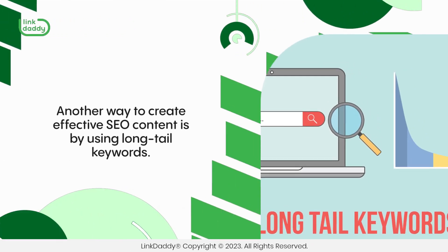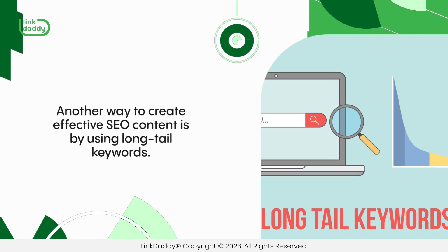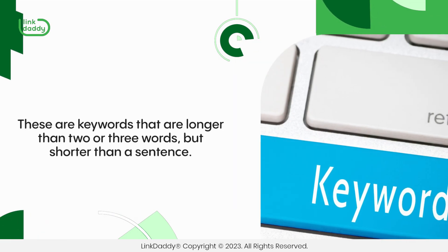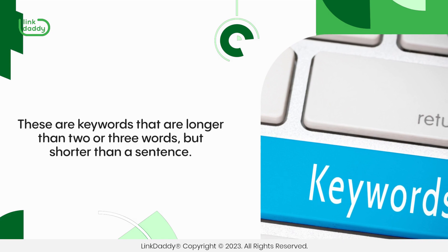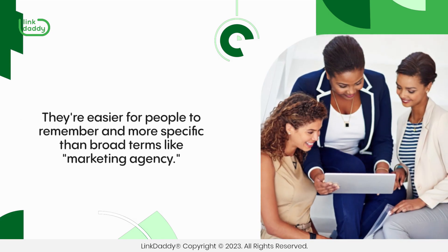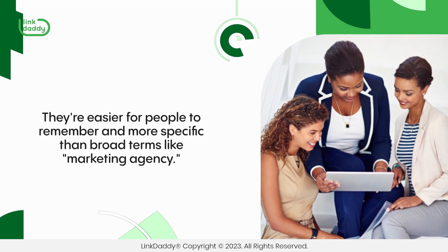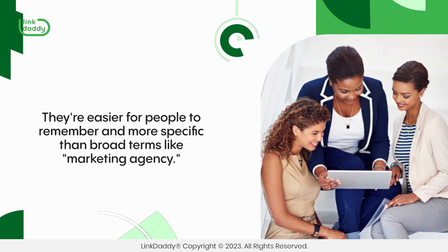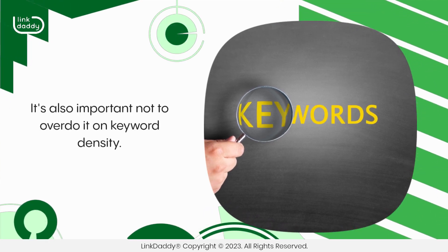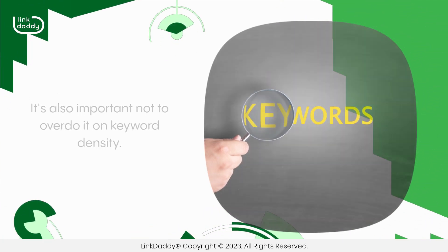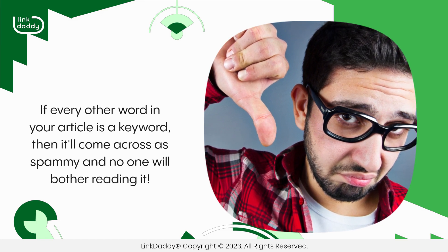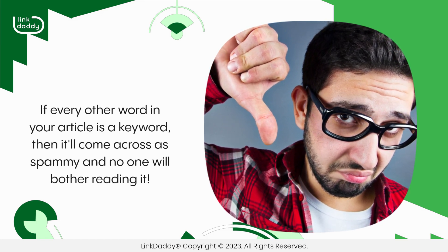Another way to create effective SEO content is by using long-tail keywords. These are keywords that are longer than two or three words but shorter than a sentence. They're easier for people to remember and more specific than broad terms like "marketing agency." It's also important not to overdo it on keyword density. If every other word in your article is a keyword, then it'll come across as spammy and no one will bother reading it.